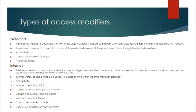The fourth type is Internal. The internal keyword is an access modifier for types and type members. We can declare a class as internal or its member as internal. Internal members are accessible only within files in the same assembly (.dll). In other words, access is limited exclusively to classes defined within the current project assembly. In the same assembly, internal members can be accessed by objects of the class and by derived classes. In other assemblies, they cannot be accessed by object or by derived classes.